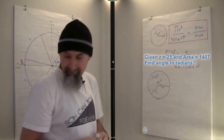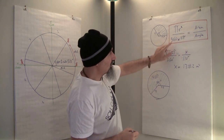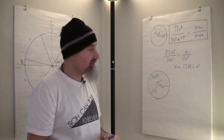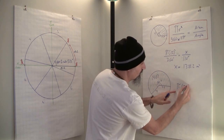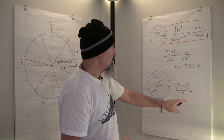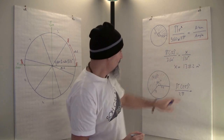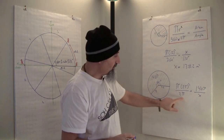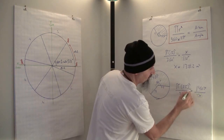We're going to use the same ratio, but instead of 360 I'll use 2π because the answer should be in radians. So we have: π r² which is 25² divided by 2π, equal to 1407 over x. The angle we figure out will be in radians because we used 2π rather than degrees.